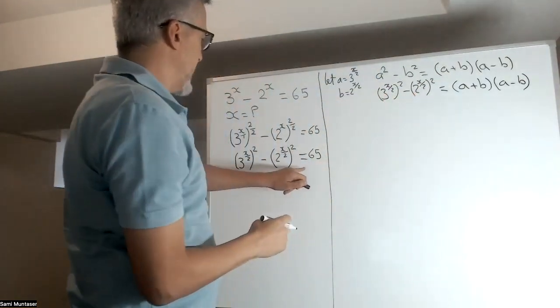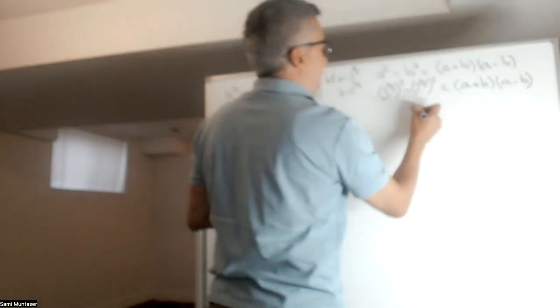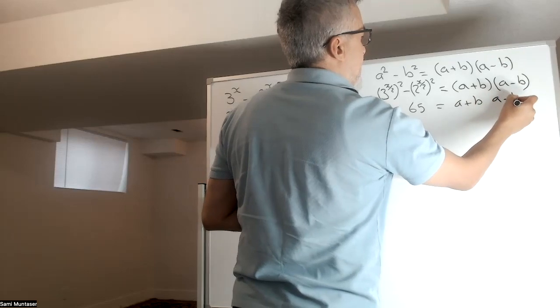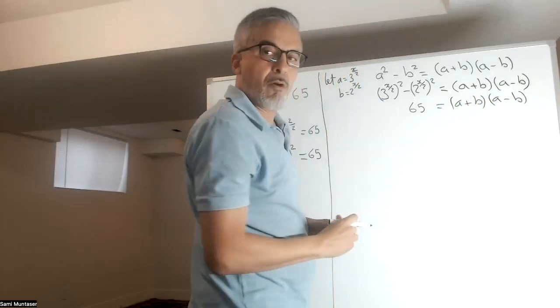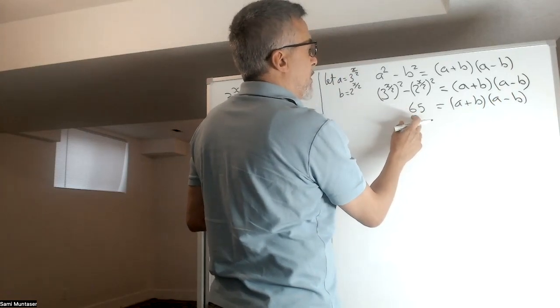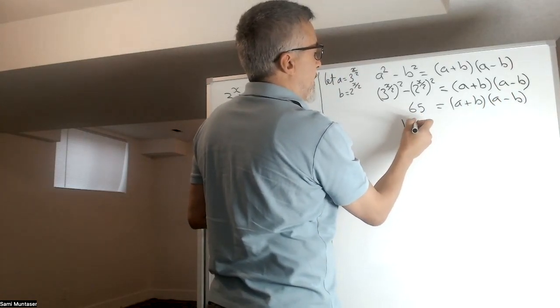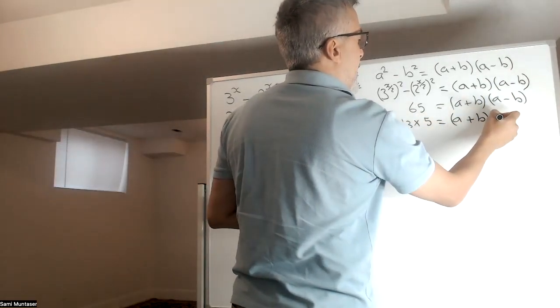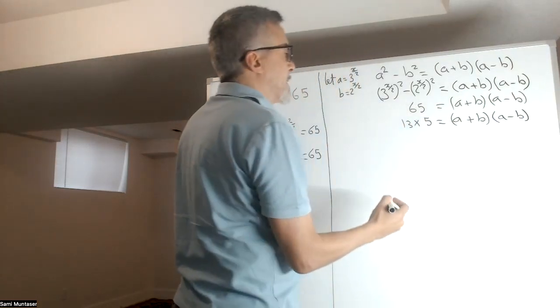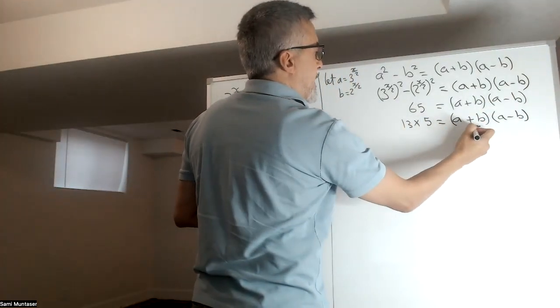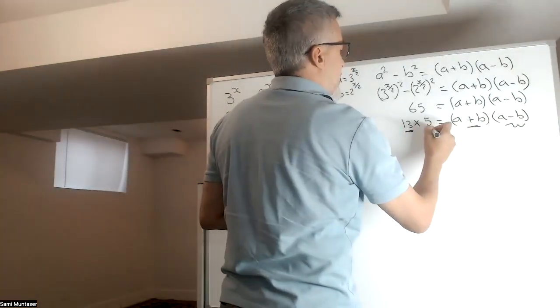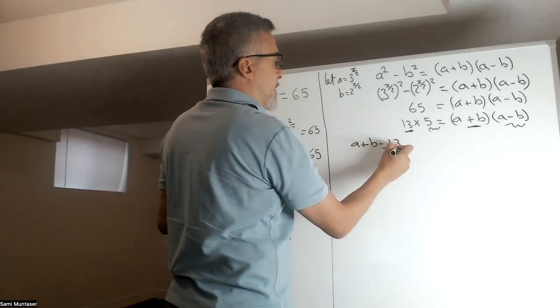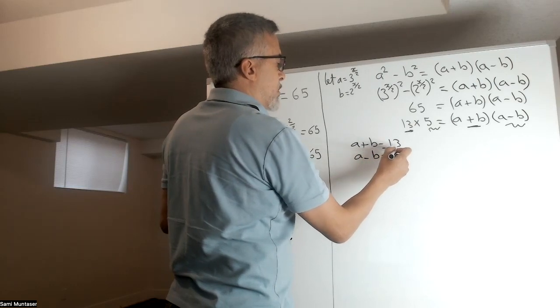Now, we know this here equals 65. So, I'm just going to replace this by 65 equals a plus b, a minus b. All right? Now, what I'm going to do here, I'm going to change the 65 to 13 times 5, which gives me a plus b, a minus b. Now, based on this, can we say this here is this, and this here is this here. So, we can say a plus b equals 13, and a minus b equals 5.